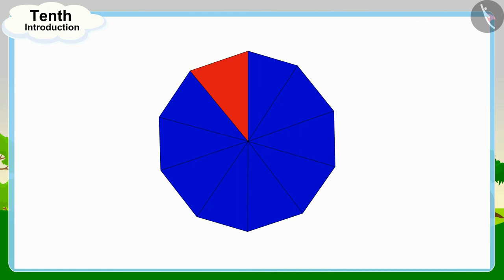Golu has colored nine out of the 10 parts of the flower because our whole is divided into 10 equal parts.